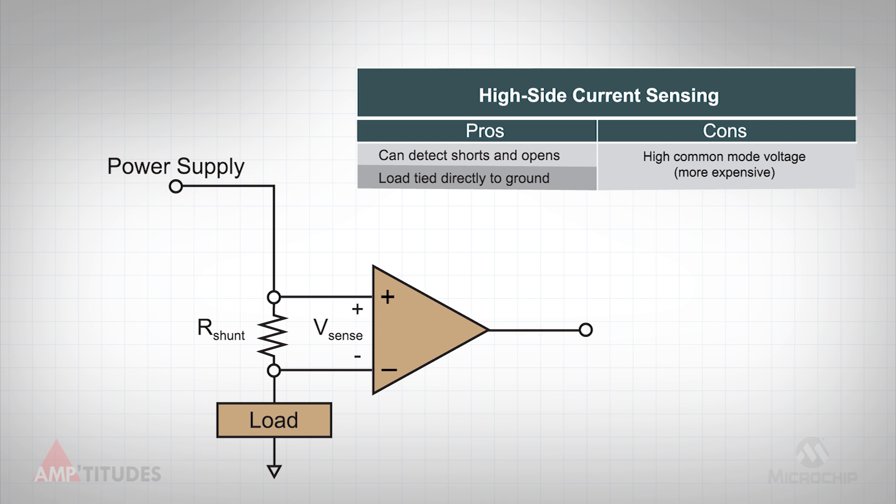The main disadvantage of high-side current sensing is that the common mode voltage is relatively high, based on the supply voltage. Hence, a high common mode amplifier is required.